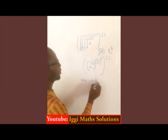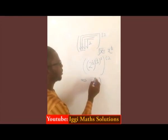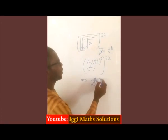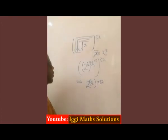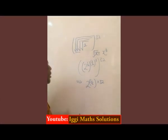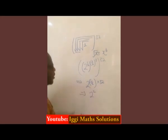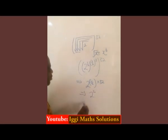This implies 2 raised to 1 over 16, then multiply by 32. So 32 times 1 is 32, divided by 16 is 2. This implies 2 raised to 2.